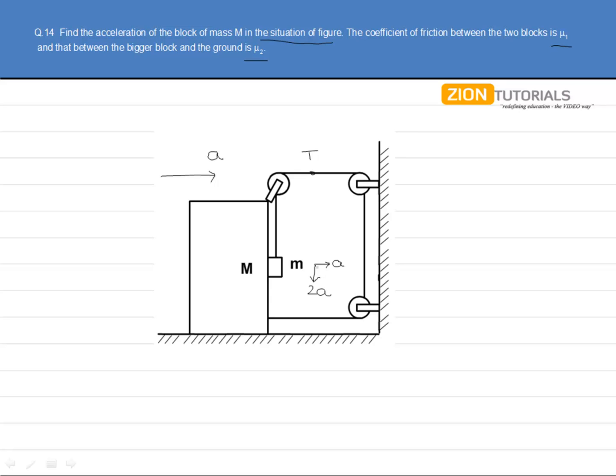Why this comes out to be 2A is that this string is shortening by the acceleration of A. This is shortening by an acceleration of A. So this string will be lengthening by the acceleration 2A. Now, let us proceed ahead with the free body diagrams of these blocks.